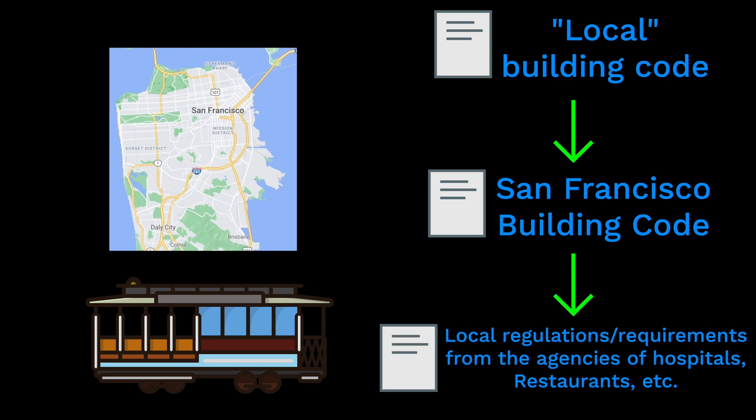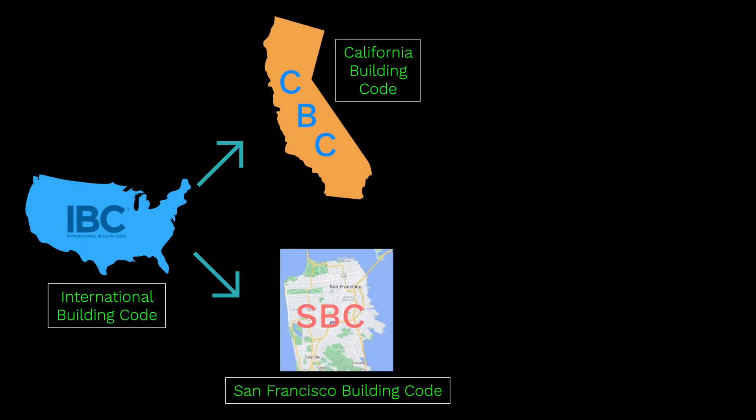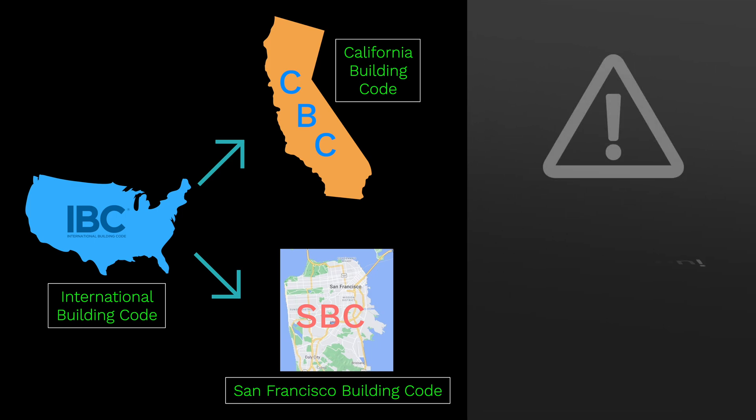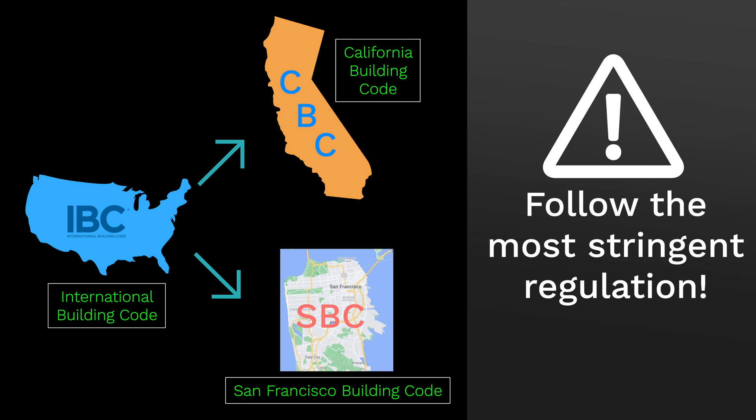Here we can refer to the local building code, the San Francisco Building Code, which was derived from local regulations from different sources such as agencies of hospitals, restaurants, and more. If the federal, state, and local codes are conflicting, follow the regulation with the stricter condition.